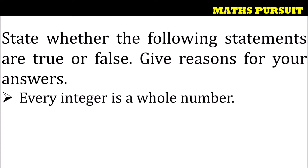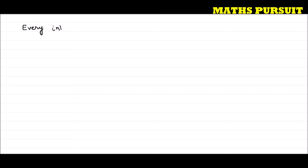The statement is: every integer is a whole number. We need to find out if this given statement is true or false. If it is true, then why? If it is false, then why? We need to state our answer.